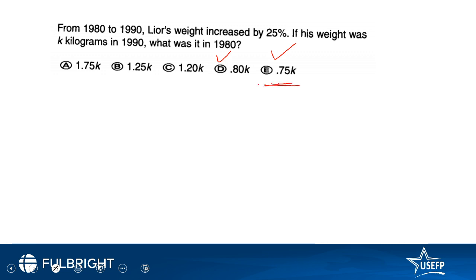An obvious answer of these two is looking out to be this option. However, let us check. So increased by, in 1990 it was k, and let's say in 1980 let's say it was x. So it increased by 25 percent, so 1.25 of x equals k.